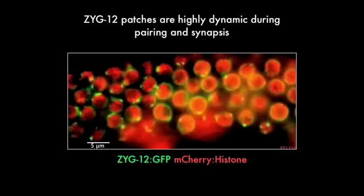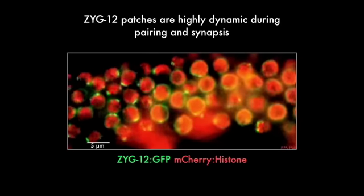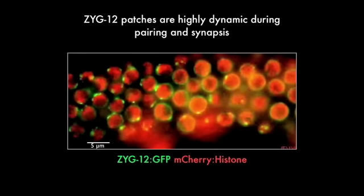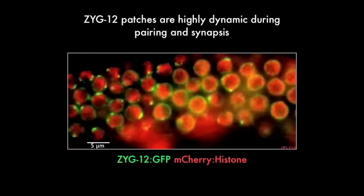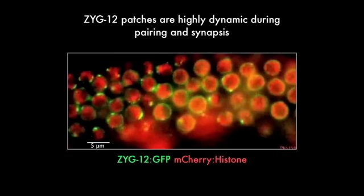So we've wondered what this motion does to promote pairing and synapsis. We find that when we depolymerize microtubules by adding drugs like colchicine to the worms, pairing between homologous chromosomes is strongly inhibited, suggesting that motion is probably important for chromosome pairing.